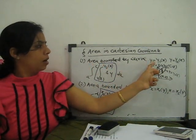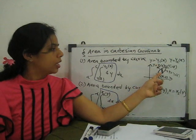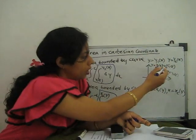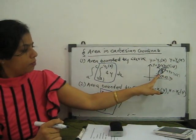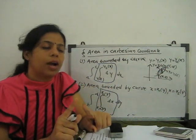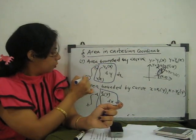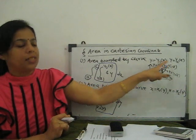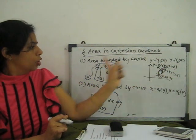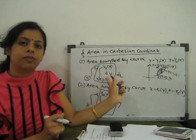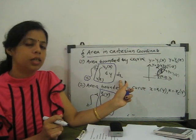For area bounded by a curve, if the curve is in terms of y₁(x) and y₂(x) — two curves — we find the area of the region between them. The limit for x goes from a to c (maximum). For y, the lower limit is y₁(x) and the upper limit is y₂(x). We integrate dy dx — first with respect to y, then with respect to x, just like double integration.